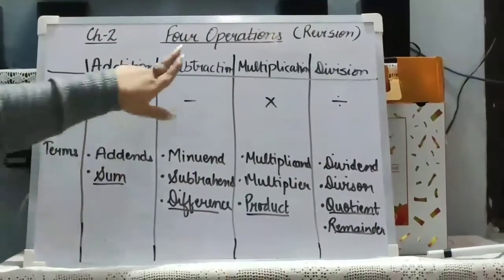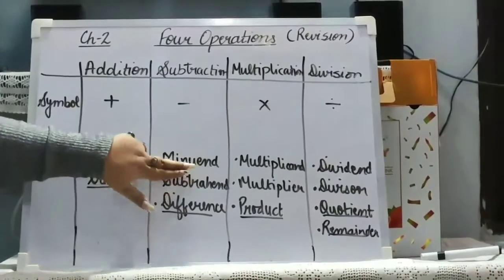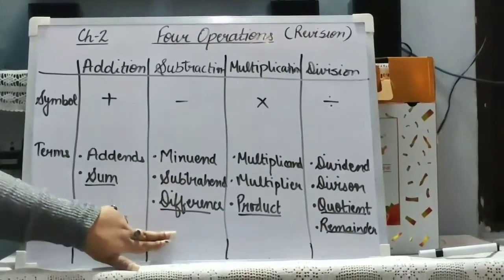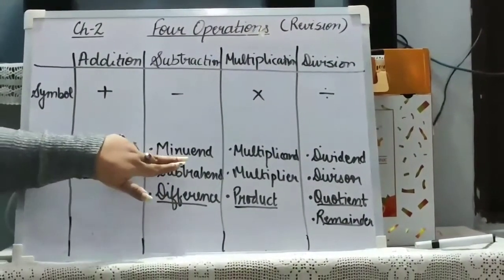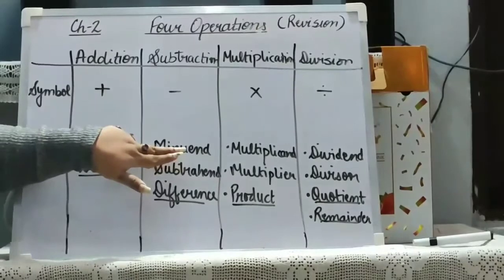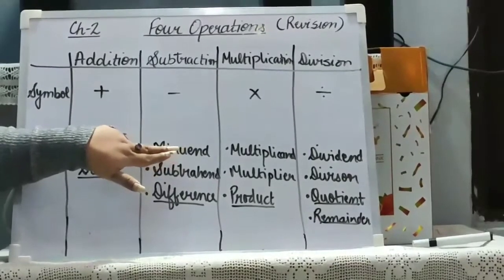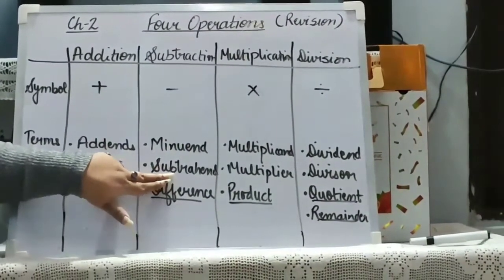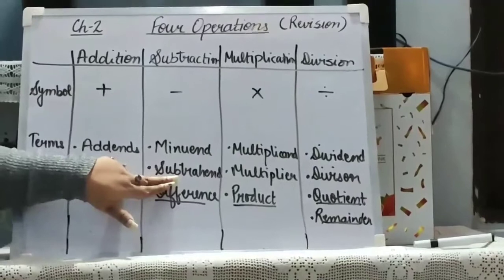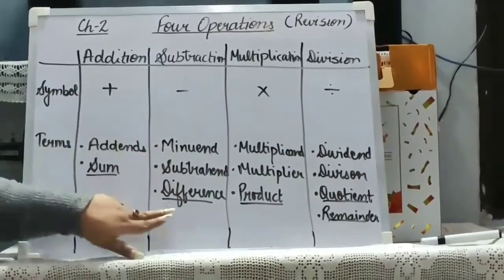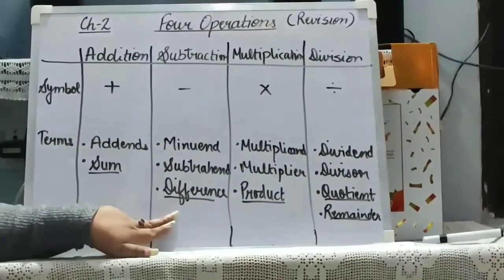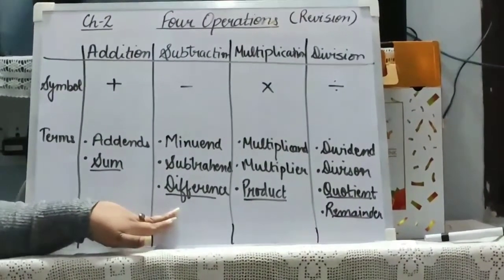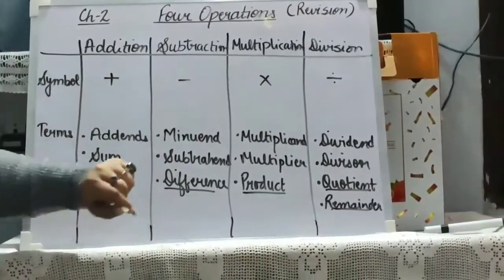Then in subtraction we have 3 terms: minuend, subtrahend and difference. Minuend is the greater number from which the smaller number will be subtracted. Subtrahend is the smaller number that will be subtracted from the minuend. And the difference is the outcome, or we can say the result, of the subtraction.